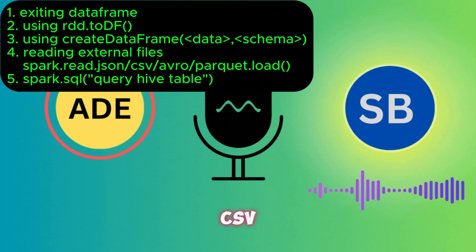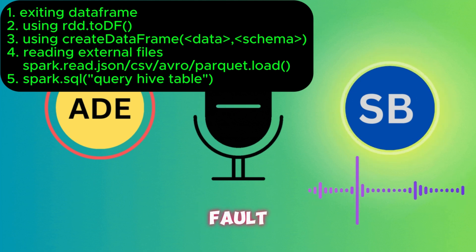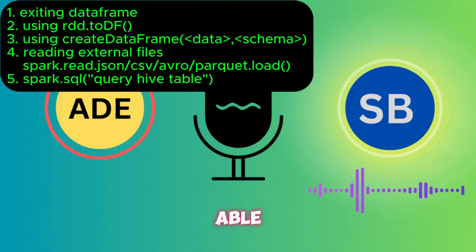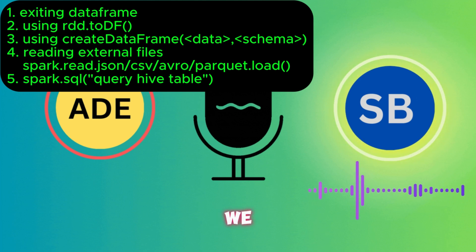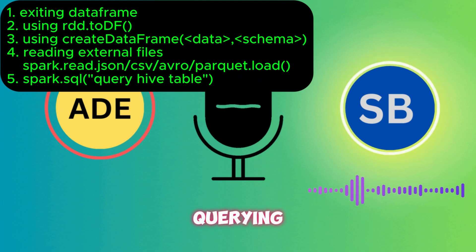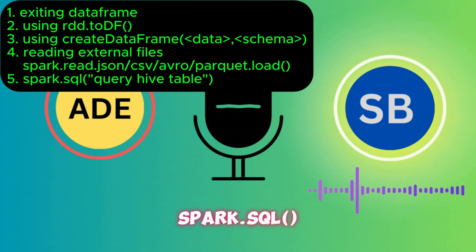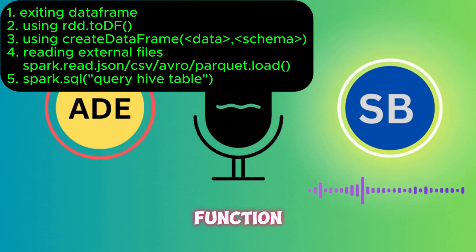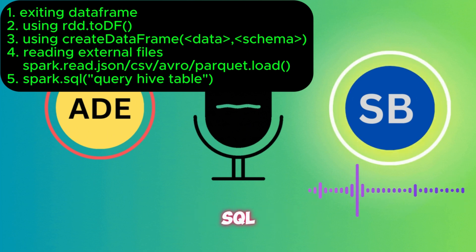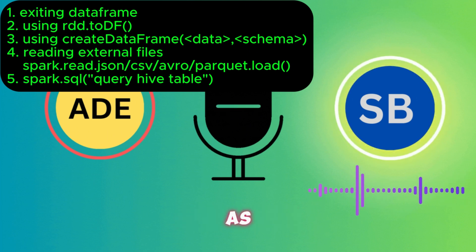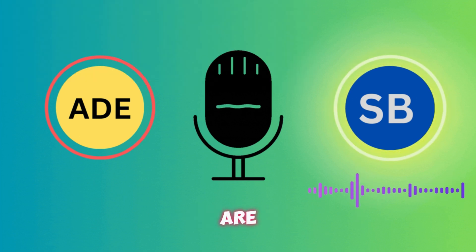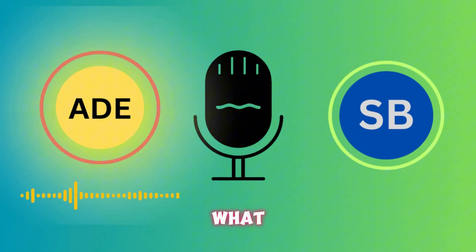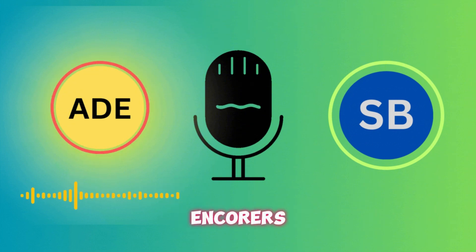You can also create DataFrames by reading from external data sources — CSV files, Parquet files, JSON files, or any other external files. Additionally, you can create a DataFrame by querying Hive tables using the spark.sql() function, which directly queries SQL tables and returns the result as a DataFrame.